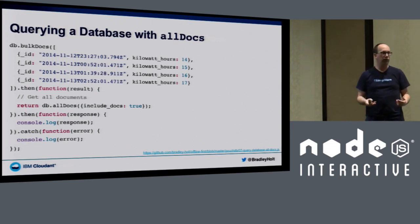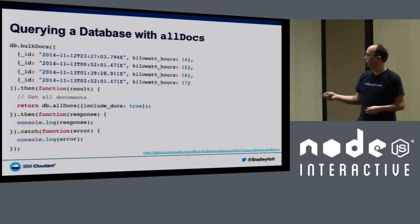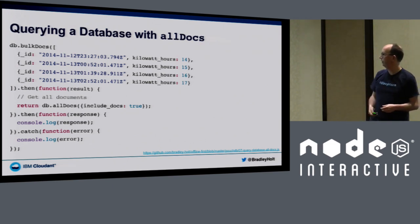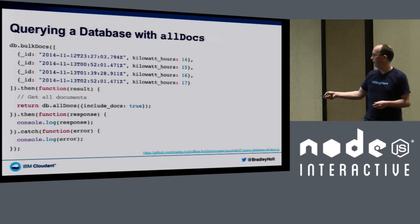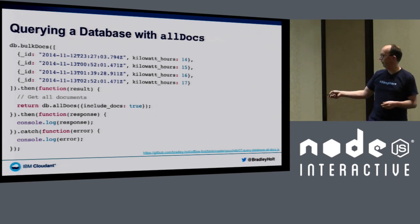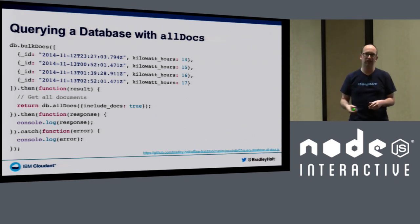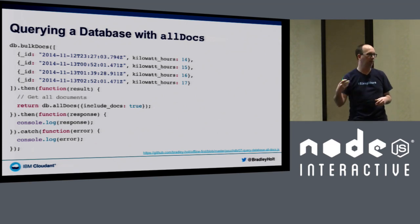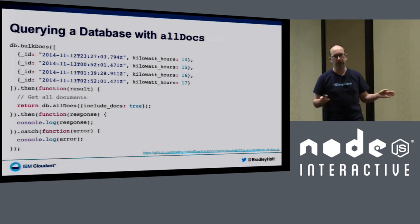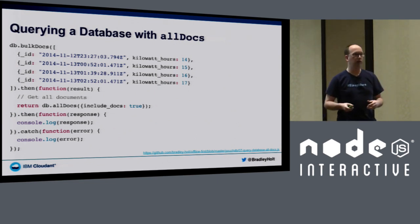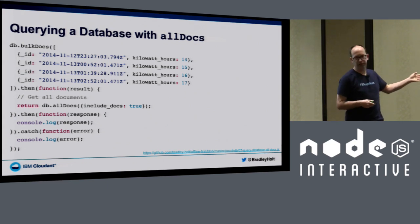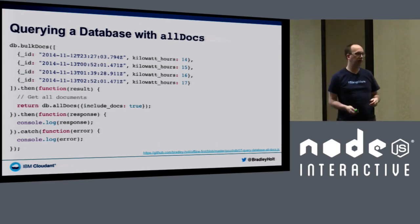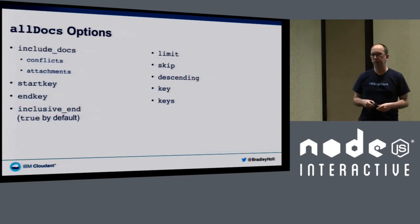You can query against the primary key — the `_id` field — using the `db.allDocs()` method. Here I'm creating a bunch of documents using the bulk docs API, then calling `db.allDocs()`. The `include_docs` option, if not set, gives you just the metadata of the documents — the ID and revision field. With `include_docs: true`, you get all the data for each document. By default this returns all documents in your database, but you can also pass options to query for a specific key, set of keys, or a range.